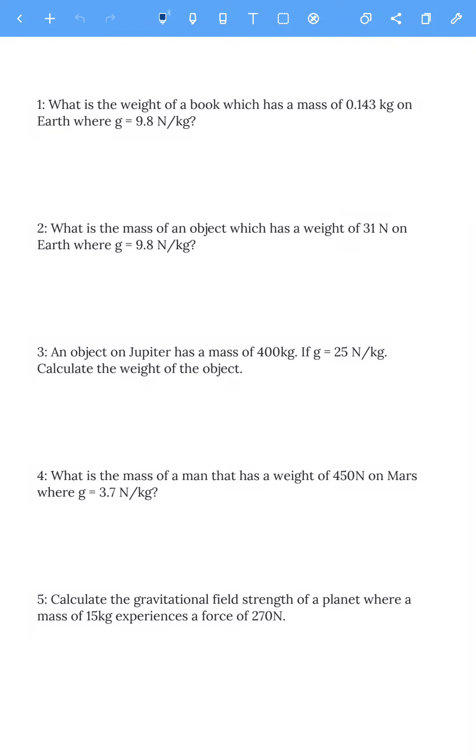This is an equation practice video for weight equals mass times gravitational field strength, W = mg. Weight is measured in newtons, mass in kilograms, and gravitational field strength in either meters per second squared or newtons per kilogram. In this video they're all newtons per kilogram, but it's the same thing.